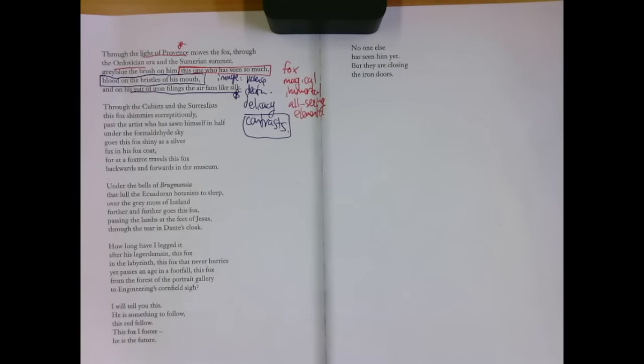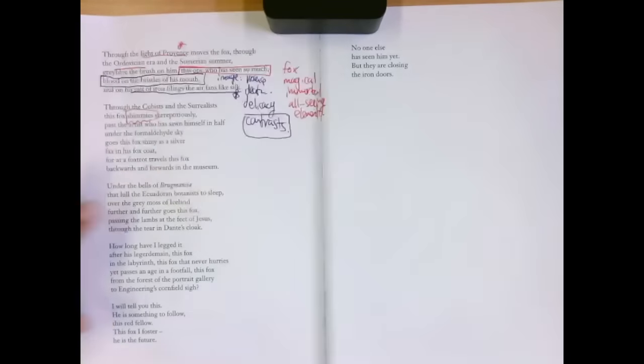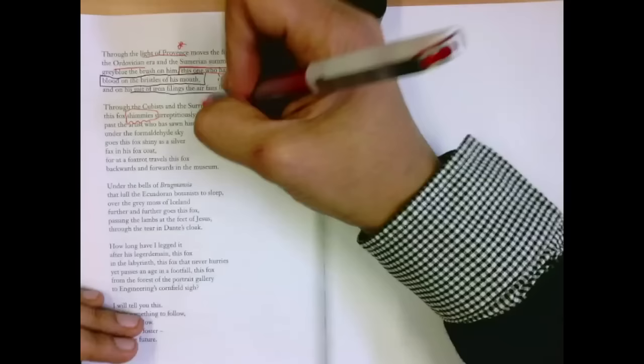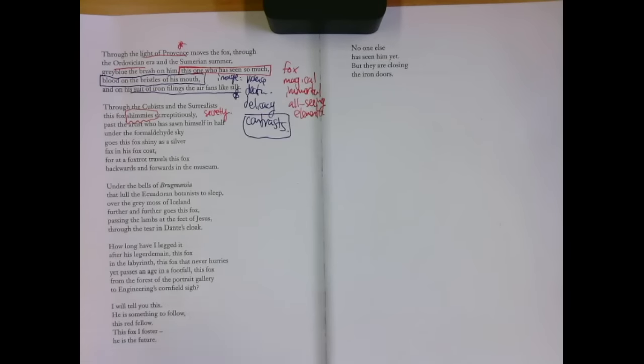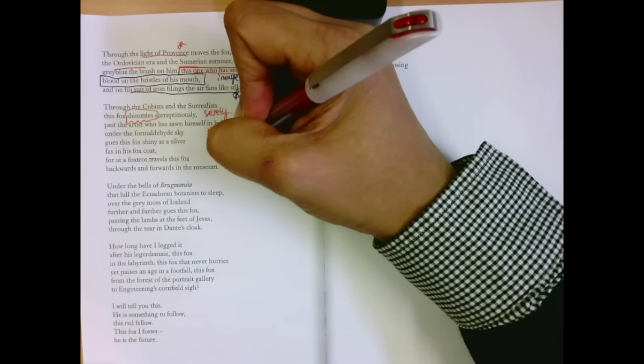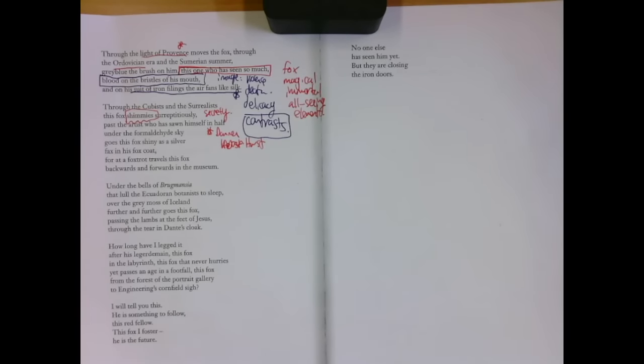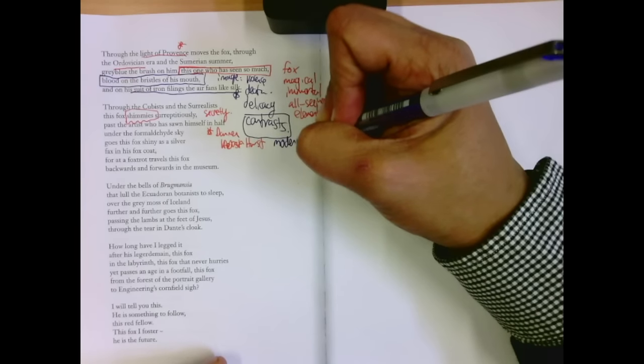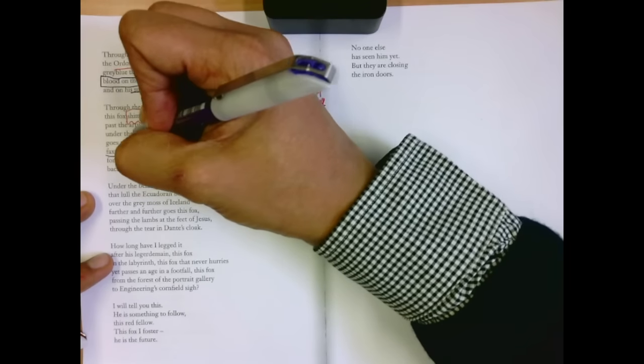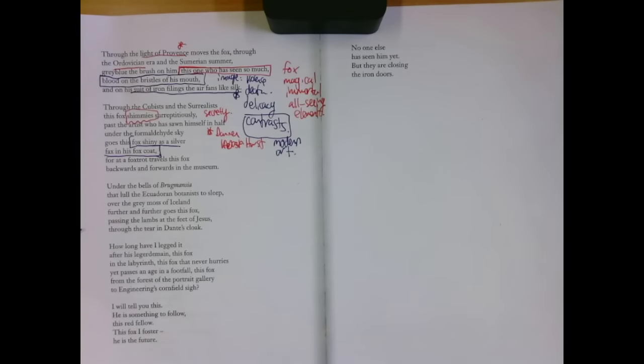Through the Cubists and the Surrealists, these are art movements. This fox, he was skedaddling, now he shimmies. How much better than walking or even trotting. Surreptitiously, secretly, as if he's up to no good. Past the artist who has sawn himself in half under the formaldehyde sky goes this fox, shiny as a silver fax in his fox coat. So this is Damien Hirst. He cuts animals in formaldehyde to give them this modern-day statue frozen in a moment. And that's modern art, you know, not just ancient, but modern, strange art. The fox, shiny as a silver fax in his fox coat. You get that repetition of fox, you get the adaptation of fax. So the same kind of silliness and innovation. That kind of joy and fun he brings to art, same the poet, just with their words, sounds, images.